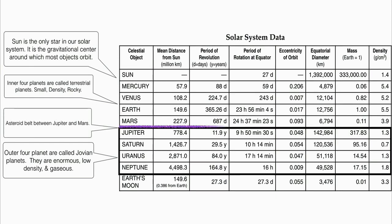In between Mars and Jupiter sits an asteroid belt. This asteroid belt contains asteroids that are orbiting around the sun. It's the dividing line between Mars and Jupiter — kind of where the terrestrial planets end and the Jovian planets begin.